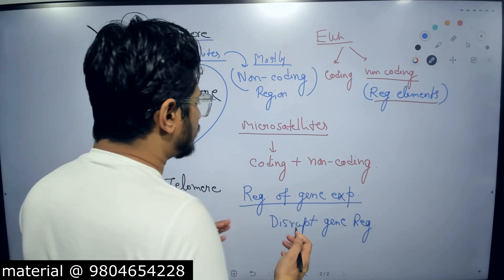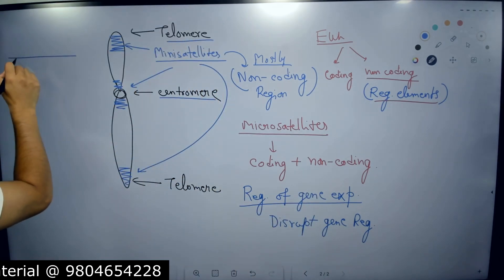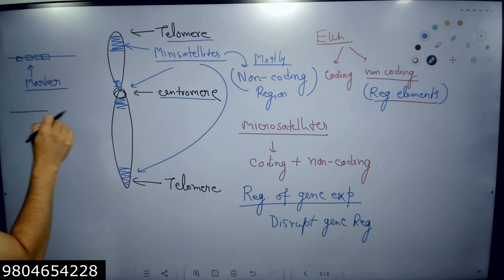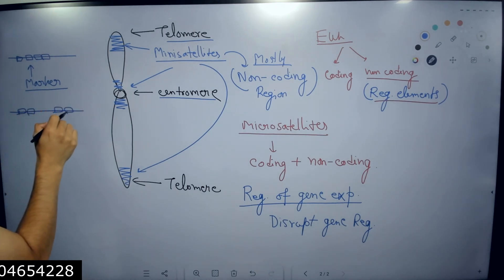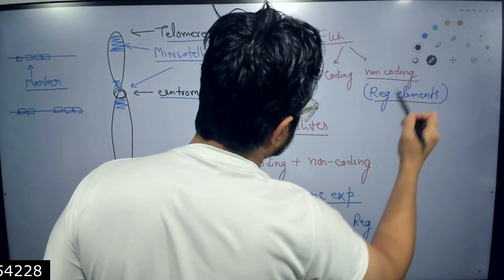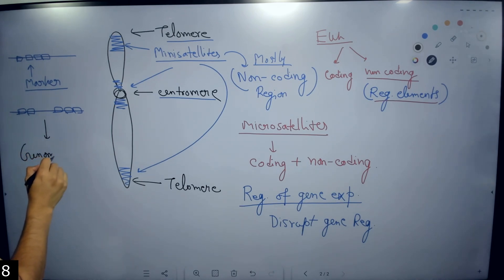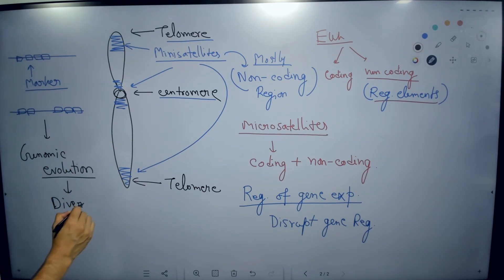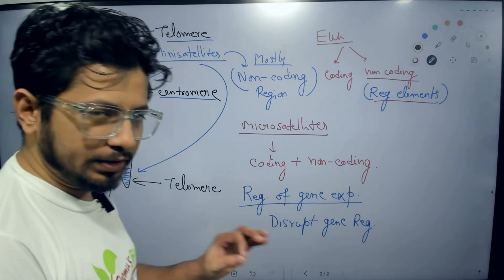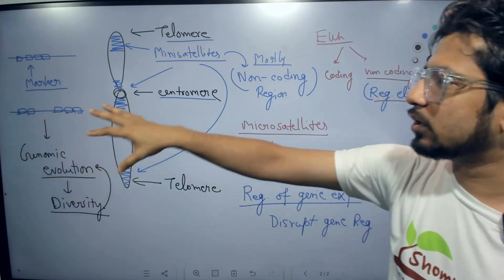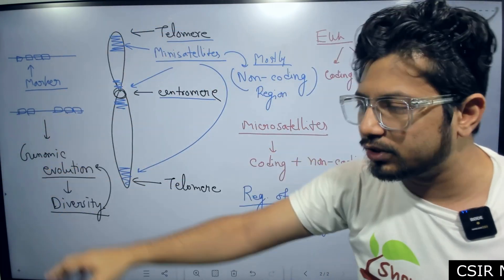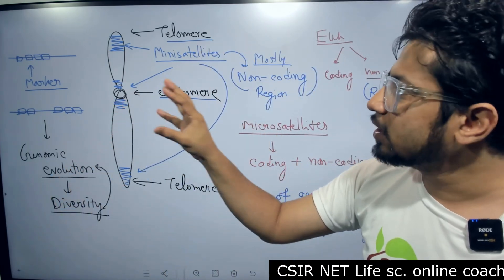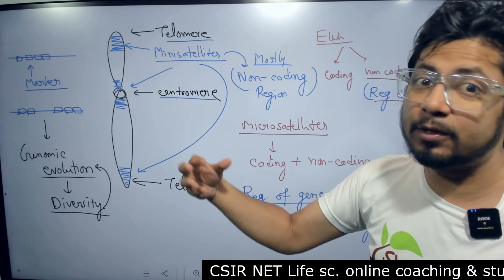If we have repeated sequences that act as a marker, and this marker changes, it is going to alter things — helping in the process of genomic evolution and diversity. That change in diversity actually leads to evolution. Genomic diversity can be altered based on the way microsatellites and mini-satellites are present in the genome, and as they change genomic diversity, that change can lead to genomic evolution. That is the purpose of microsatellites and mini-satellites as we now understand.